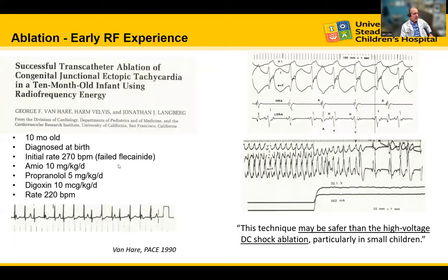Later, George Van Heer and colleagues described the use of radiofrequency ablation on a 10-month-old diagnosed at birth with JET at 270 beats per minute, having failed flecainide and still at 220 on amiodarone. They placed a physiologic catheter across the His area, identified a signal with a big A electrogram and His electrogram, and hooked that up to radiofrequency ablation, which was successful. Van Heer stated this technique may be safer than high-voltage DC shock ablation, particularly in small children.